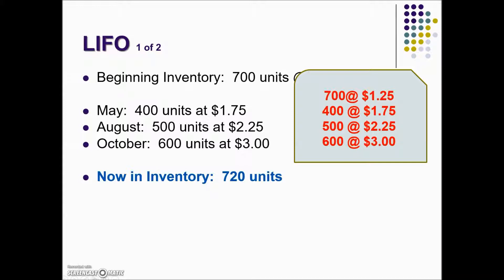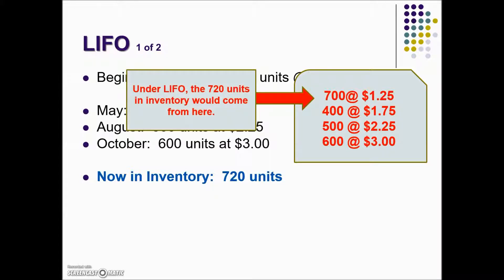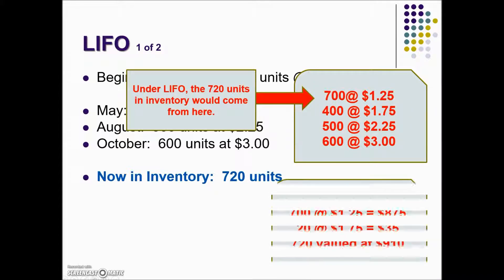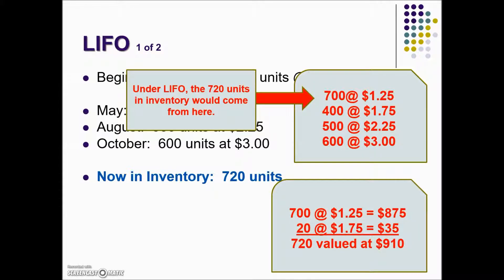To find the inventory using the LIFO method, we have 720 remaining units. Since the most recent purchases are sold first, our inventory starts from the oldest stock: 700 units at $1.25 and 20 remaining units from the May purchase at $1.75. So 700 at $1.25 and 20 at $1.75 gives us the inventory value for the 720 units using the LIFO method.